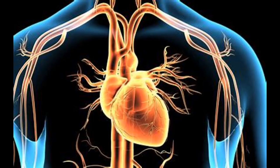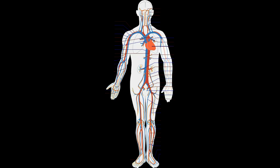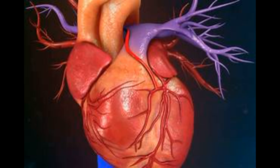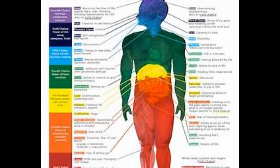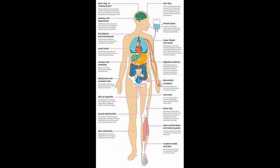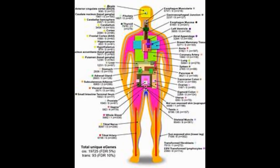At the cellular level, molecules combine to form cells, the basic structural and functional units of an organism. Cells are the smallest living units in the human body. Among the many kinds of cells in your body are smooth muscle cells, nerve cells and epithelial cells.